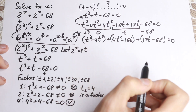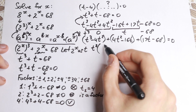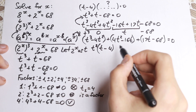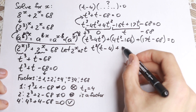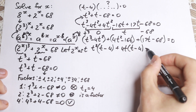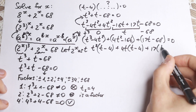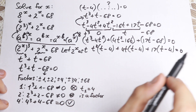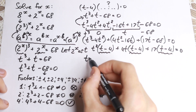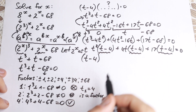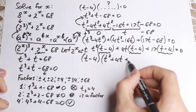Take a look closely — for t cubed and t squared we can factor t squared, giving t squared times (t minus 4). For 4t squared minus 16t we factor 4t, giving 4t times (t minus 4). And for 17t minus 68 we factor 17, giving 17 times (t minus 4). This is really great because we have t minus 4 in all three groups.